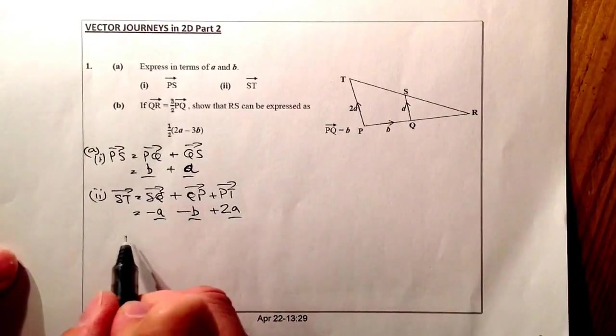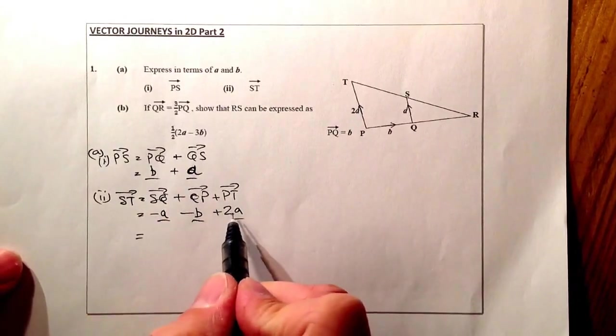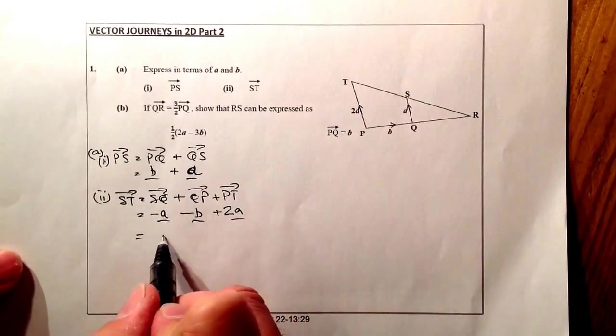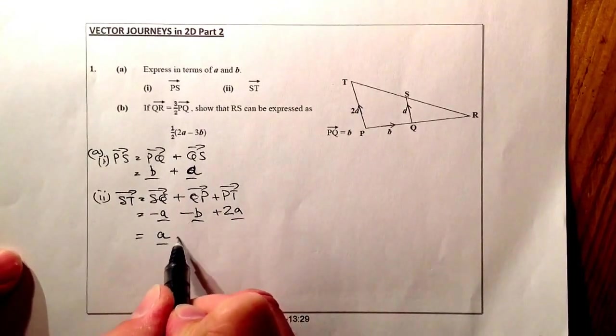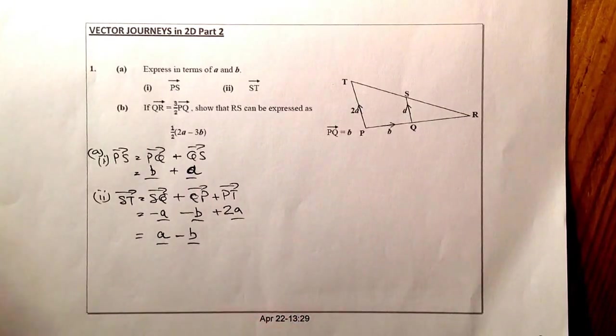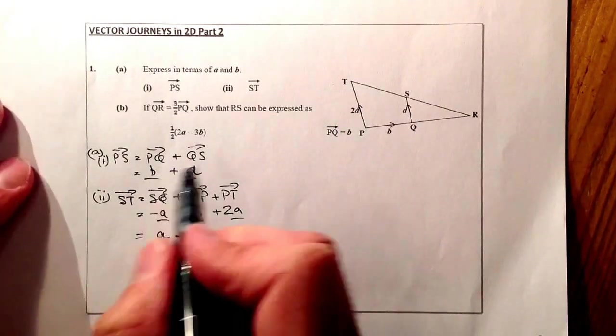Right, I can tidy that up a bit just to make sure I've got that completed. So I've got 2A, take away A, leaves them with A, minus B. And that's that part of the question complete. Let's go into part B.